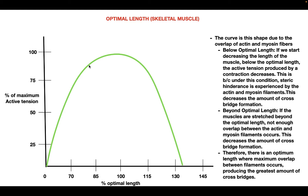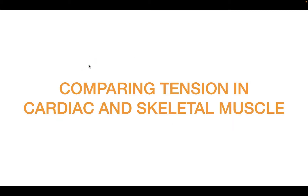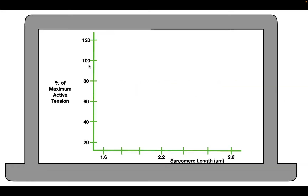Those three concepts — isometric contractions, passive versus active tension, and optimal length — are going to be incredibly important for this video. Now let's move on to comparing the tension in cardiac and skeletal muscle, and then use those ideas to talk about the Frank-Starling curve. We're going to take cardiac and skeletal muscle, stretch them to different lengths, and see what tension is produced.